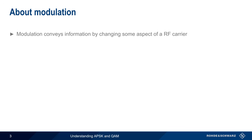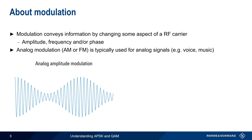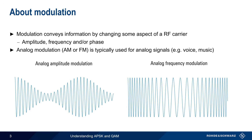Modulation is the process whereby we change some aspect of an RF carrier in order to convey information — that is, the carrier's amplitude, frequency, and/or phase. Analog modulation, such as AM or FM, are typically used to convey analog information, such as human voice or music.